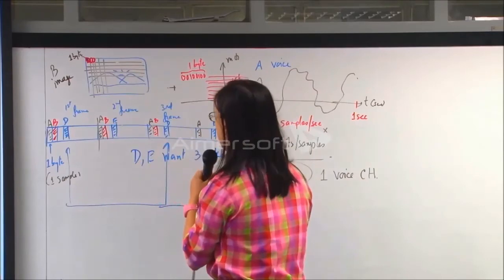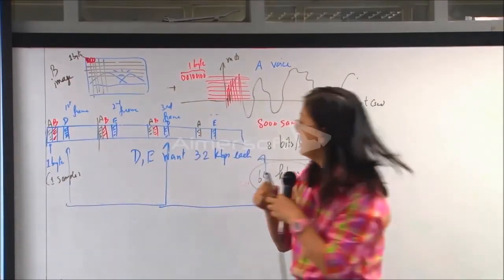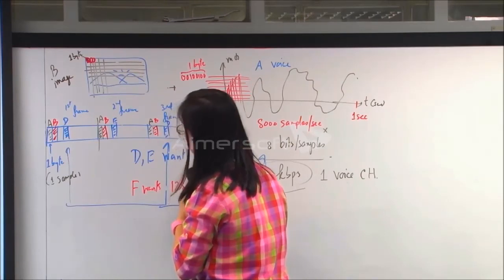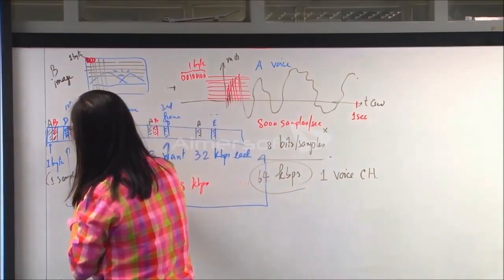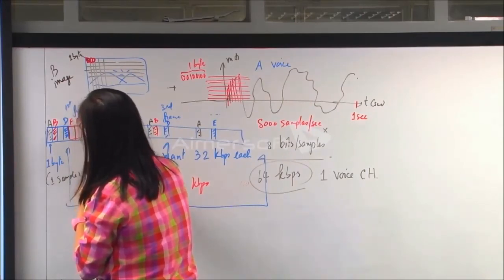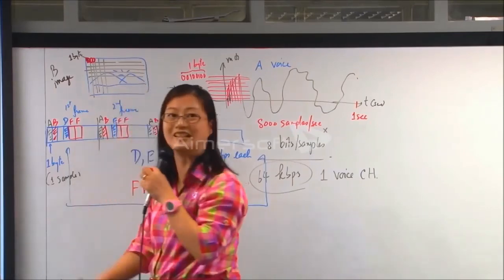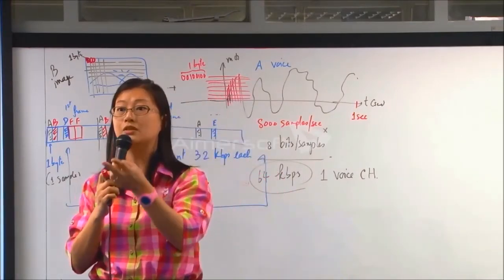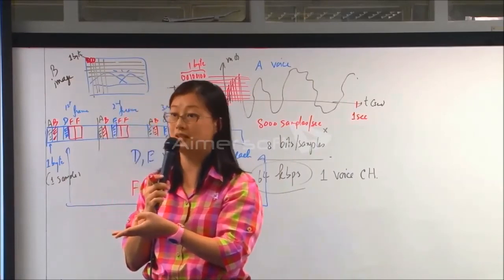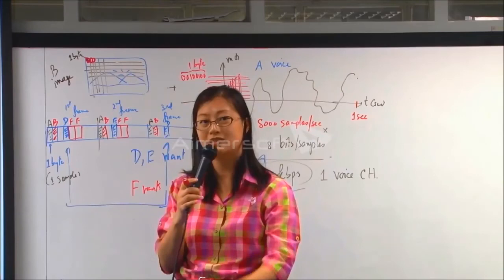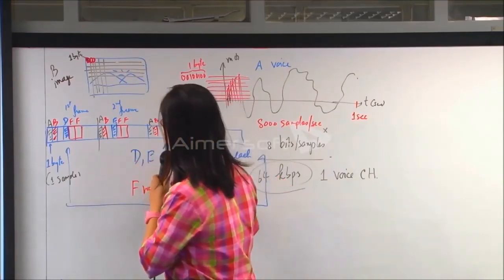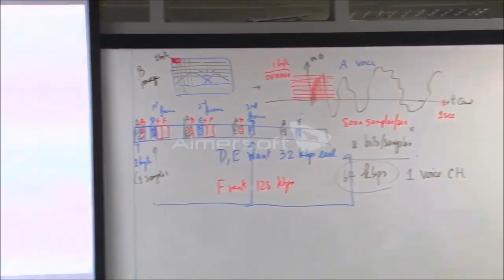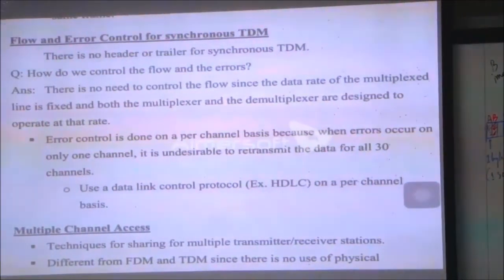Now if F wants to send 128 kbps, F has to use two slots per frame. One slot gives 64 kbps, so two slots give 128 kbps. You can design it flexibly — in multiples or fractions of 64 kbps. I think we'll leave it here and go back to talk about flow and error control next time. Thank you.